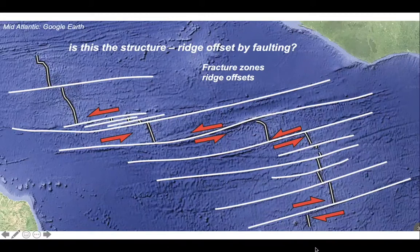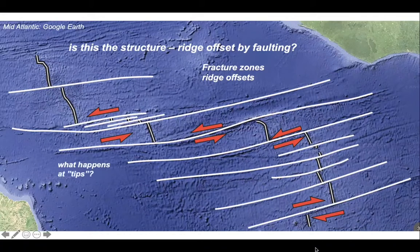This was a question posed by Earth scientists in the early part of the 1960s. One problem is that if we think this is the fault geometry with this sense of offset, what happens at the ends? What happens at the tips of the faults? Because some of these displacements are very large indeed.